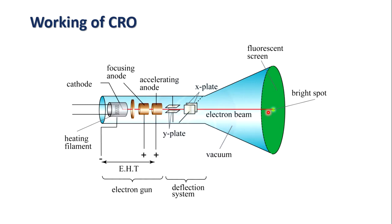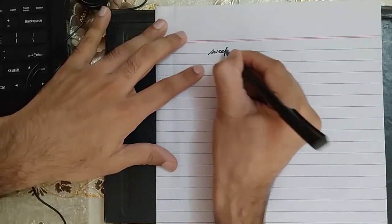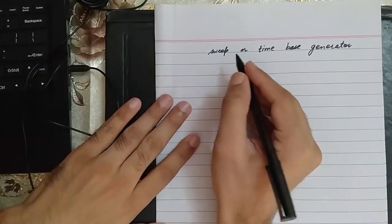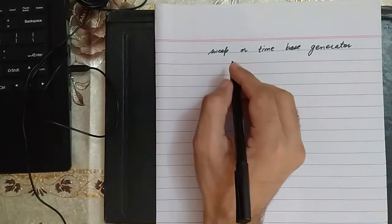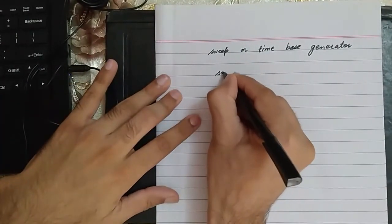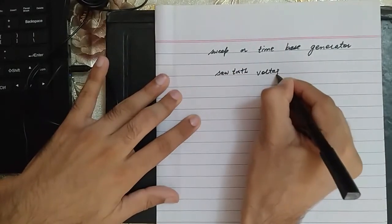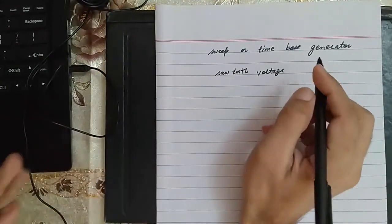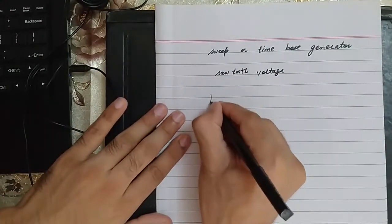The voltage that we apply to the x-plate comes from a circuit inside the CRO called the sweep or time-based generator. The voltage applied to it has a waveform that is saw-tooth, so it is known as saw-tooth voltage. What is the meaning of saw-tooth?